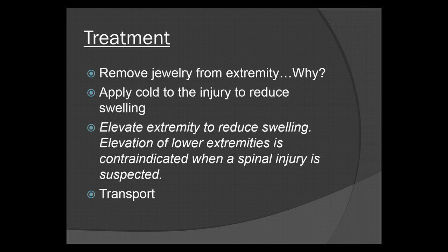Treatment: you're going to remove the jewelry from the extremity. Injuries swell, and if your patient has broken a bone in their hand or finger and they're wearing a wedding band, you have the potential for cutting off circulation — it will swell into the wedding ring and the ring can actually occlude blood flow. So remove jewelry from the injured extremity. Apply cold to the injury to reduce the swelling. Elevate the injury also to reduce the swelling. Elevation of lower extremities is contraindicated when spinal injury is suspected, simply because it puts more pressure on the spine and could produce further injury. And of course, transport.